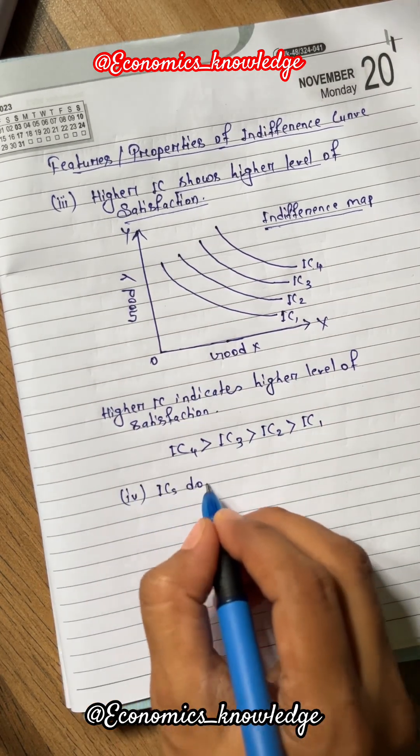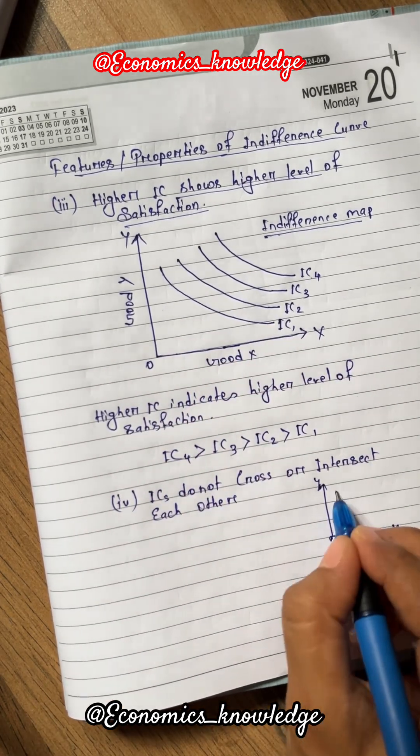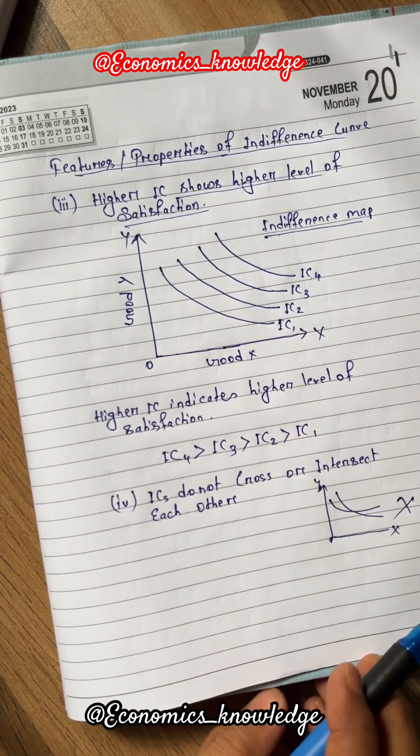The fourth feature of Indifference Curve is that ICs do not cross or intersect each other. Indifference curves are parallel to each other; they do not cross or intersect. So these are the features of Indifference Curve.